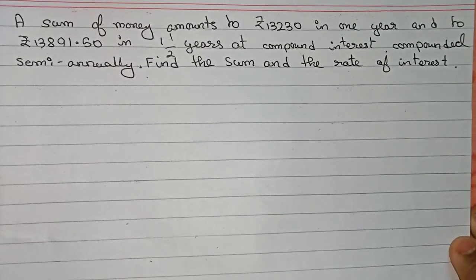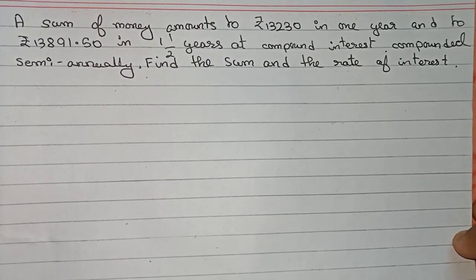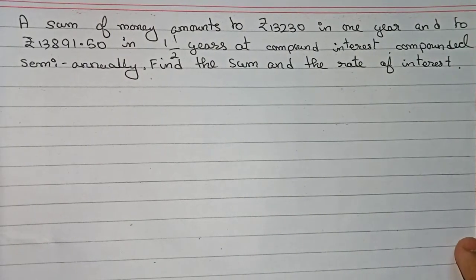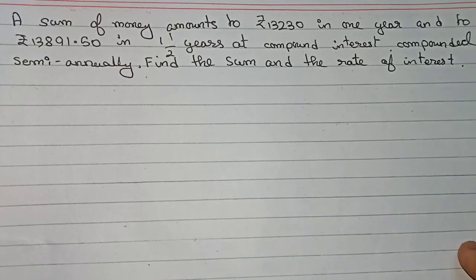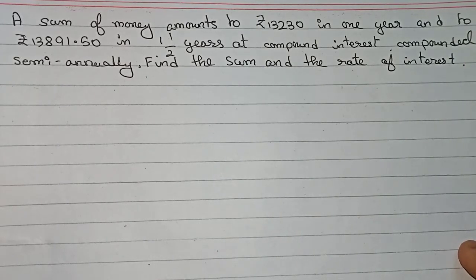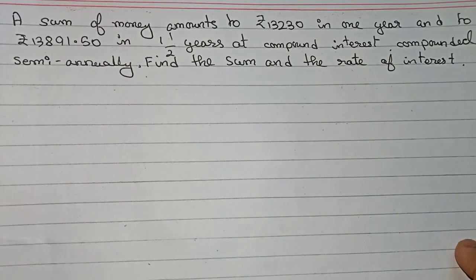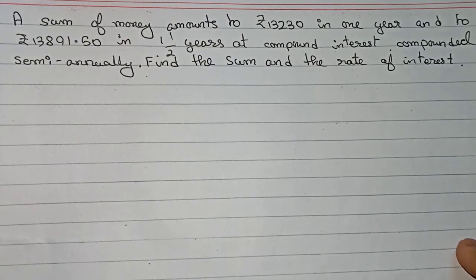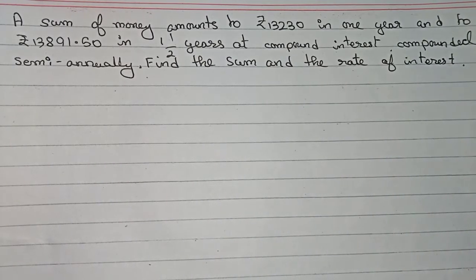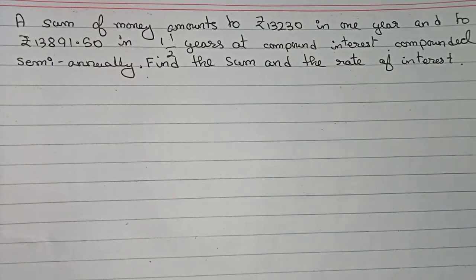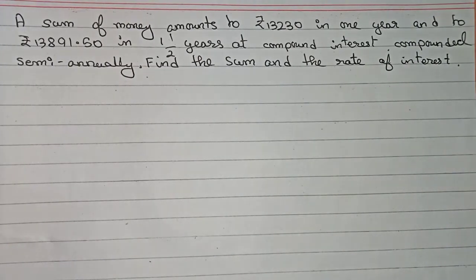Hello guys, welcome to this video. In this question, a sum of money amounts to rupees 13,230 in one year and rupees 13,891.50 in one and a half years at compound interest, with interest compounded semi-annually. Find the sum and the rate of interest.